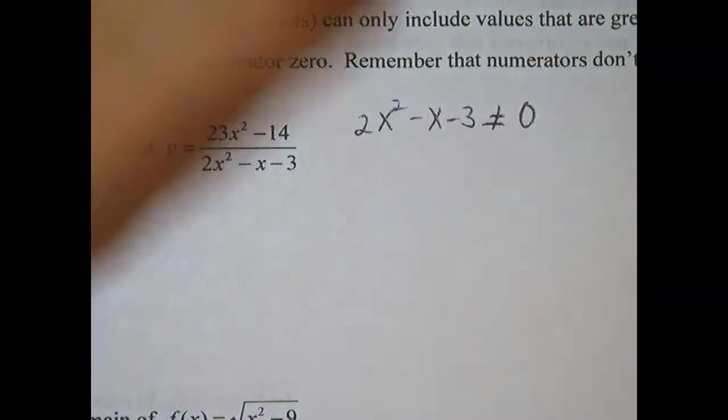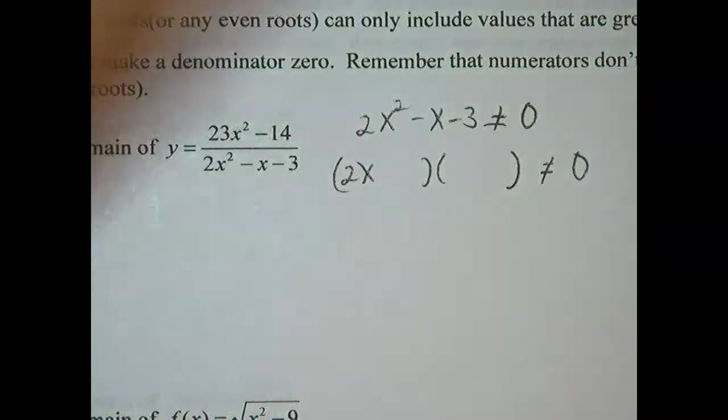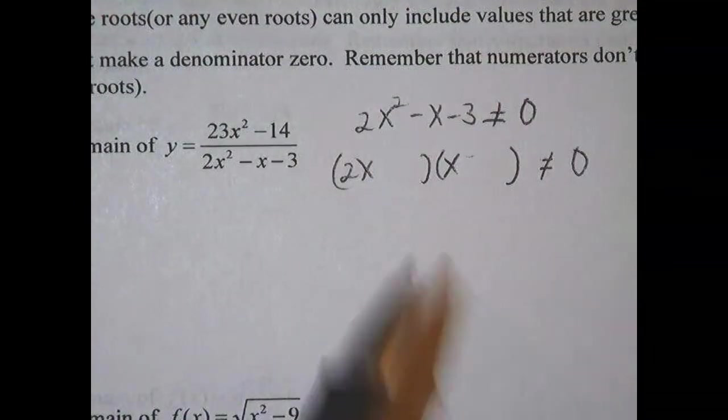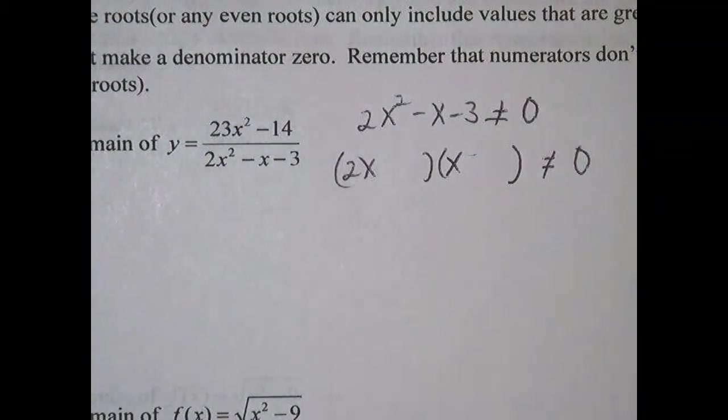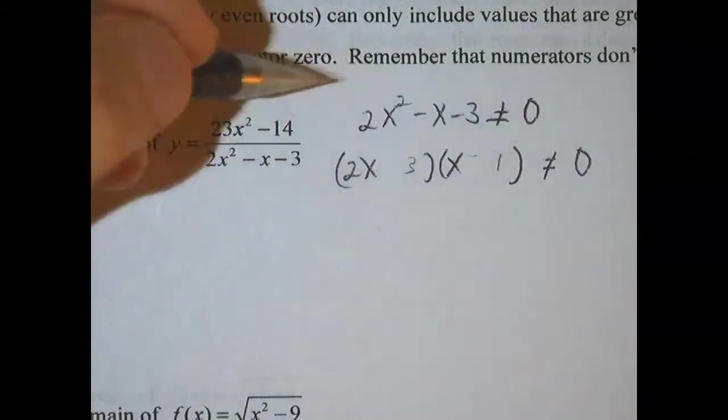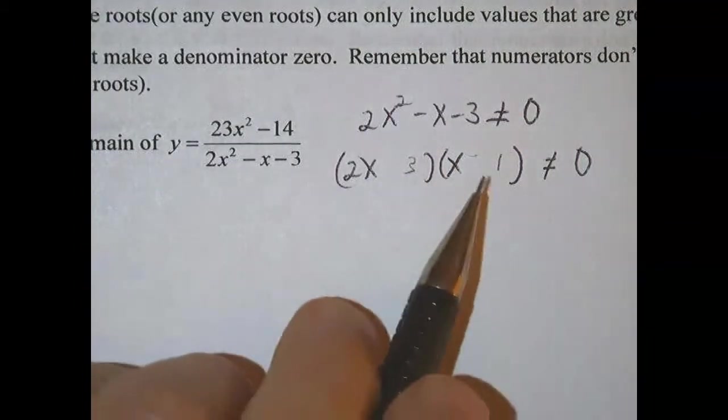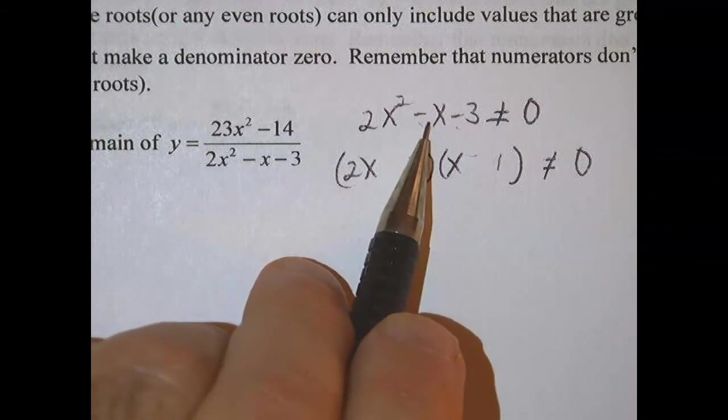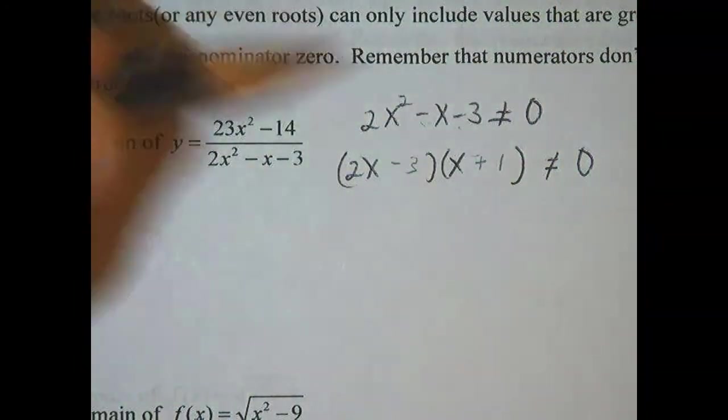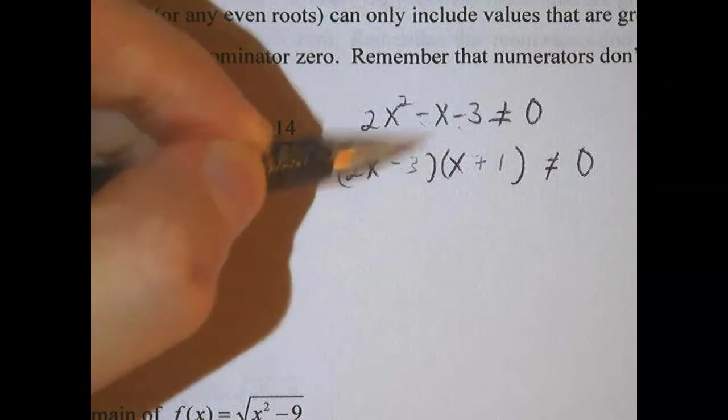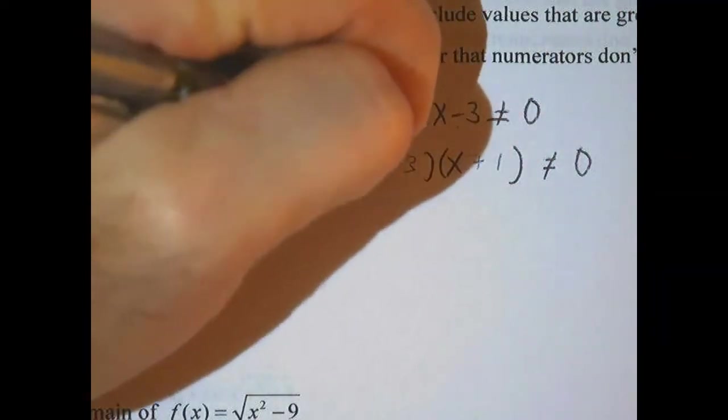So this is a factorable expression and we factor this trinomial with two sets of parentheses. The only way to get 2x² is 2x times x. And the only way to get a 3 is 3 times 1. But the question is, if we put the 3 here and the 1 here, can that possibly get us back where we started? Well, the signs have to be different because it has to be negative. And there has to be more negatives than positives because they have to add up to negative x. So I'm going to put a negative here and a positive here. We'd have 2x times x which is 2x² - 3x and plus 2x which is -x and -3.